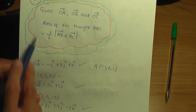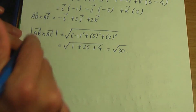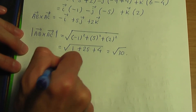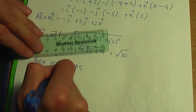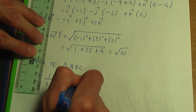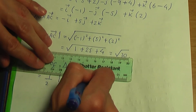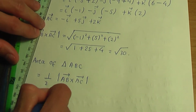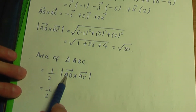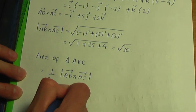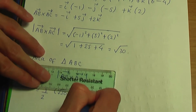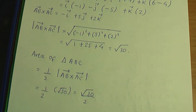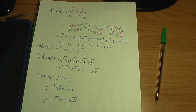Lastly, let's apply the formula. The area of triangle ABC is 1 over 2 times the magnitude of AB cross AC. The magnitude is root 30, so the area equals root 30 divided by 2. That is the solution to this particular question, completing the question and ending the video.